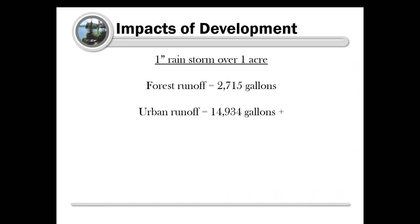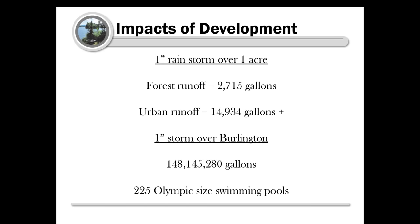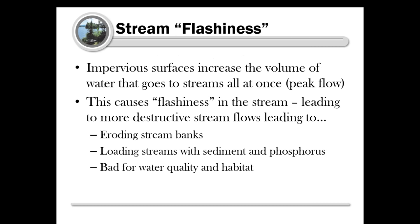As an example: a one-inch rainstorm over one acre in a forested landscape produces under 3,000 gallons of surface runoff. But in an urban area with rooftops and roads, it's almost 15,000 gallons. Applied to Burlington, that's 148 million gallons of water in a one-inch rainstorm flowing over the surface - equivalent to 225 Olympic-sized swimming pools. That's a tremendous amount of water flowing off the landscape that wouldn't have been doing so under natural conditions.